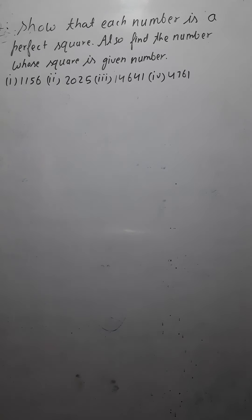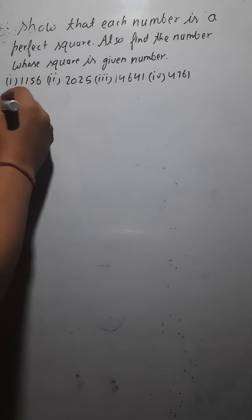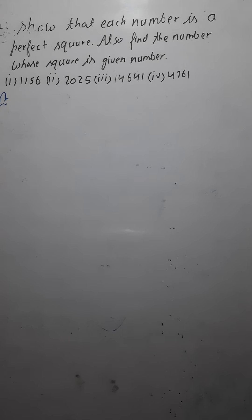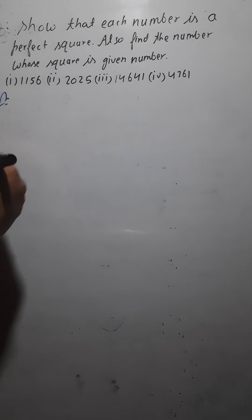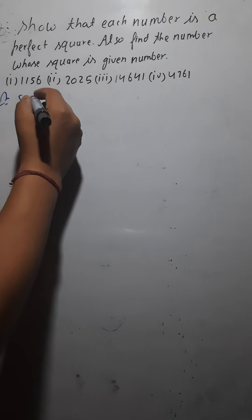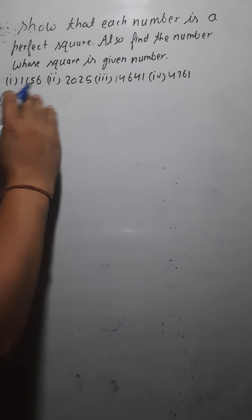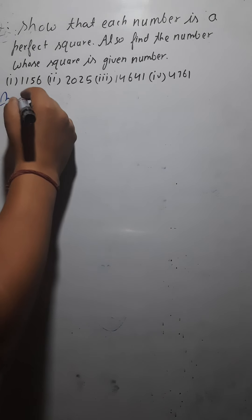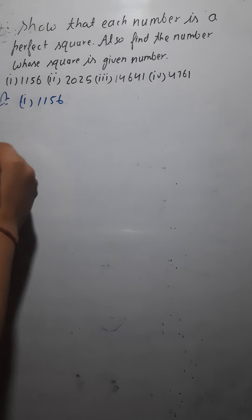As we have already discussed, there are three steps to find out whether a given number is a perfect square or not. Step number one: resolving the given number into prime factors. So let's start with the first one, that is 1156.